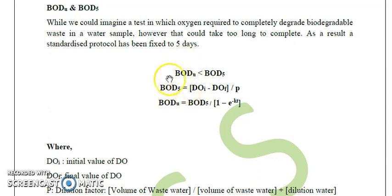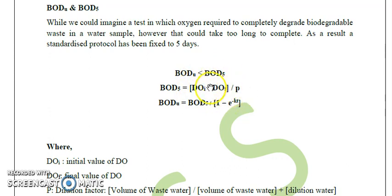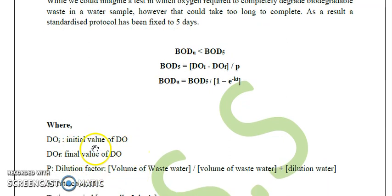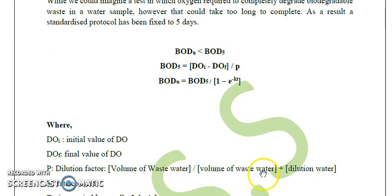BOD over five days is calculated with the help of dissolved oxygen. We take the DO of the initial day (first day), subtract the DO of the final day (fifth day), and divide by P, where P stands for the dilution factor. DOi is the initial value of oxygen present in the water, DOF is the final value, and P is the dilution factor.